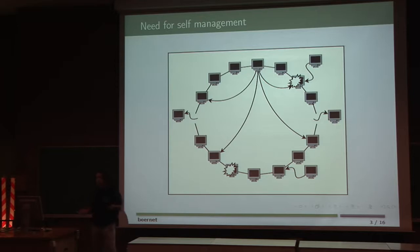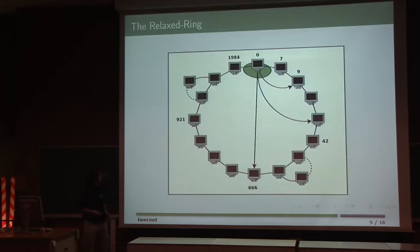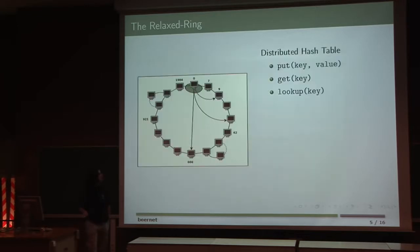In the relaxed ring, we build a distributed hash table as in the other rings. That means that you can do storage by putting something with a key and a value and retrieving something with the key. Or you can search for the responsible of the key with the operation lookup. The responsibility of this hash table goes from the predecessor, excluding the predecessor, and including the peer itself.